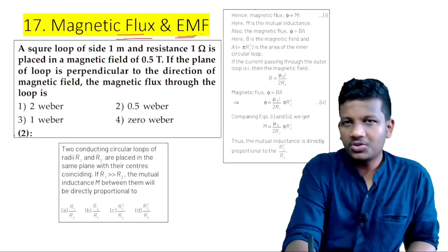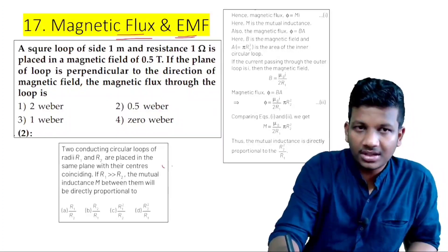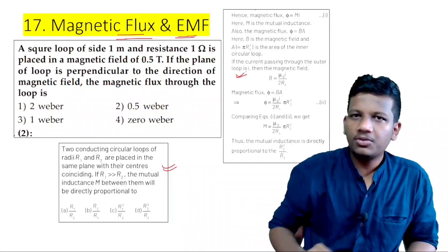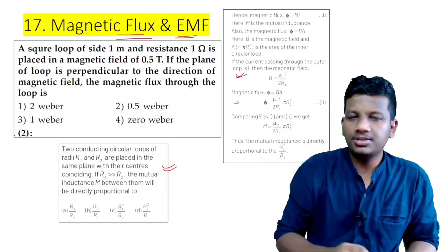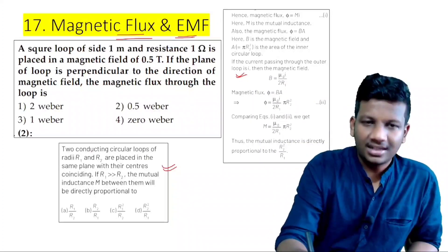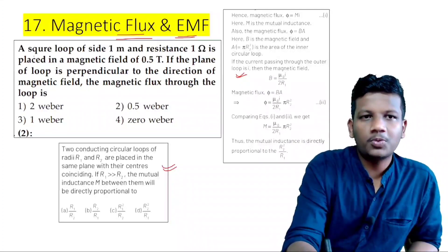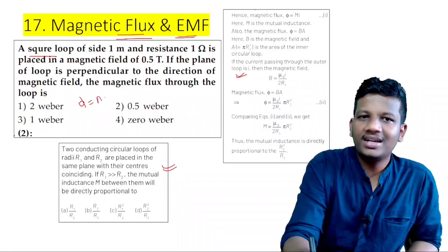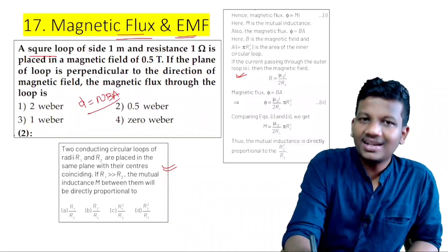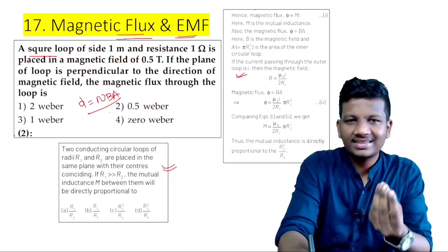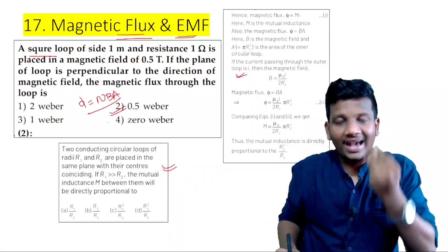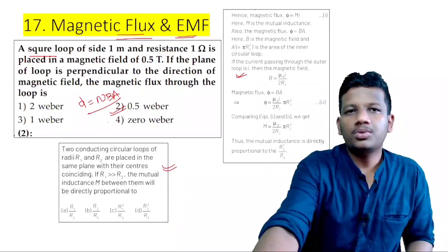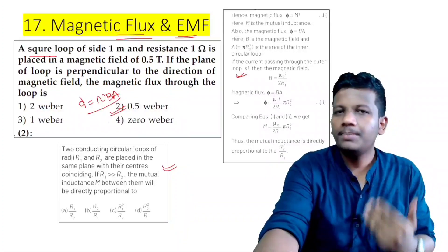Next is magnetic flux and EMF. In this prediction, we have a circular loop and a magnetic flux — it's complex. But now in the exam, we have a circular loop and a square loop and a magnetic flux formula. If you apply the formula, it's very very direct — within 5 to 10 seconds you can solve it. It's very simple.